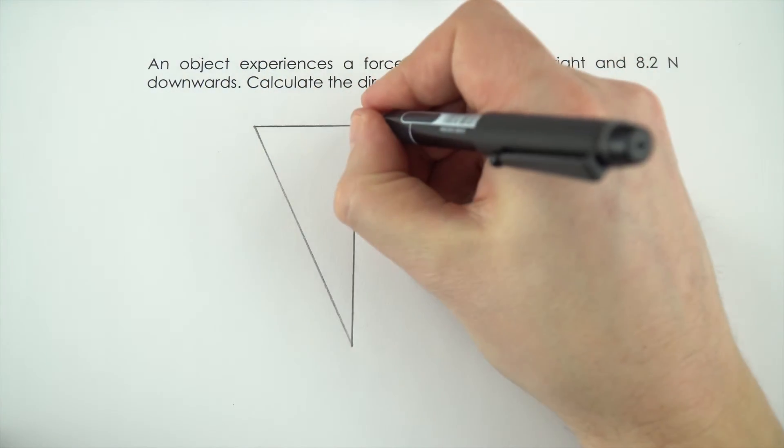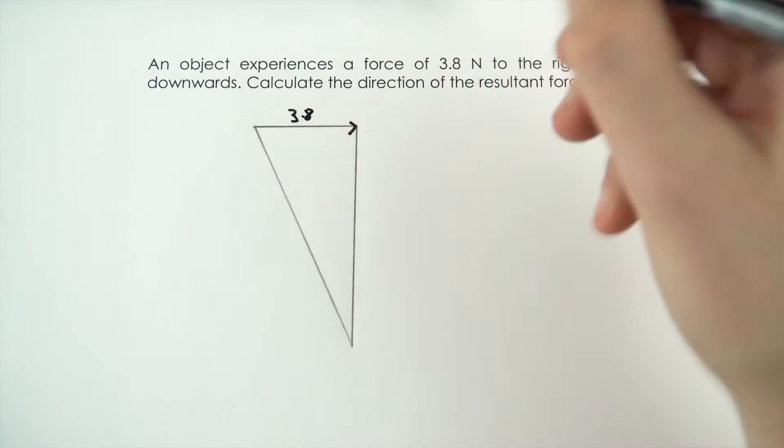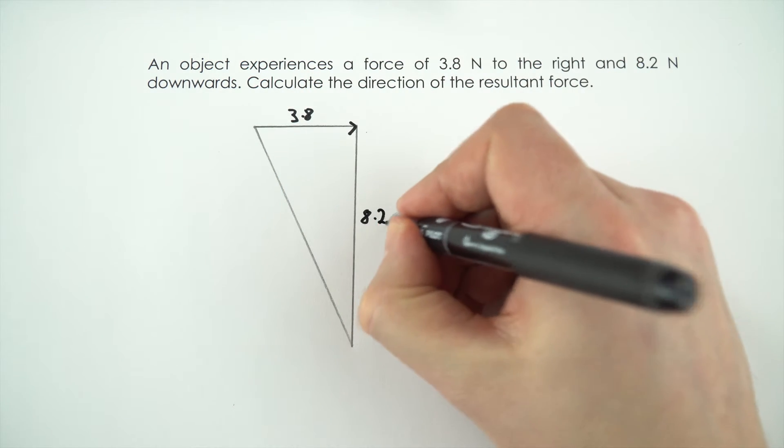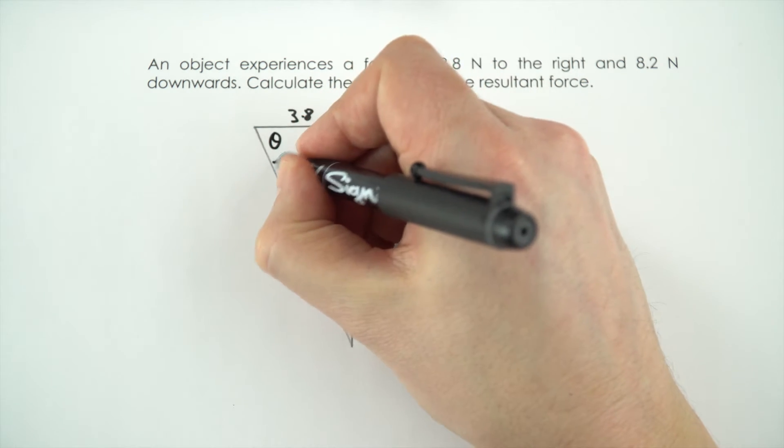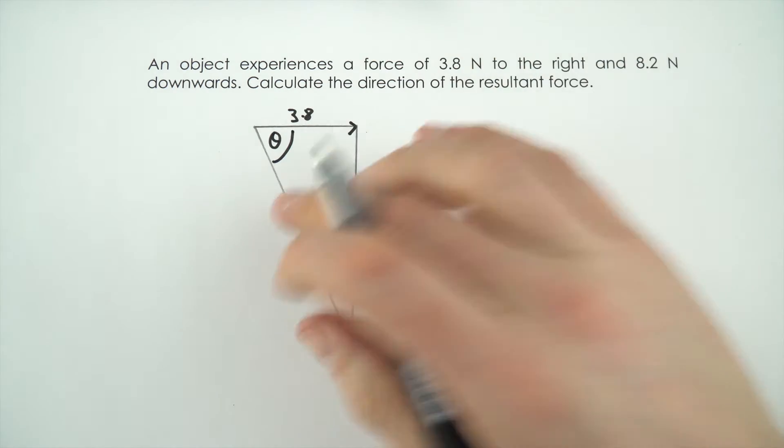I'm then going to label things: 3.8 newtons to the right and 8.2 newtons going down, and it's this angle here, theta, that we want to find out. How do we do that?